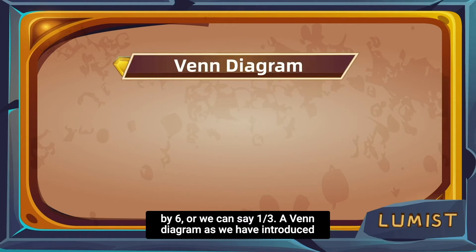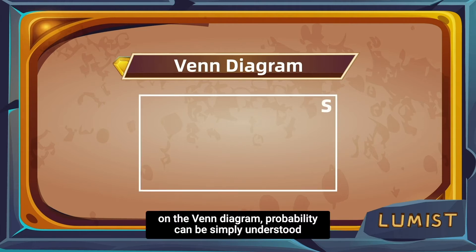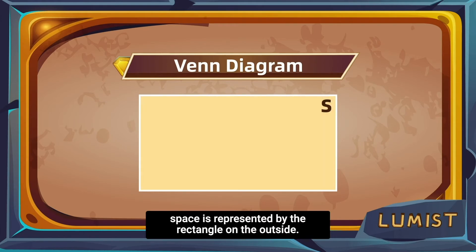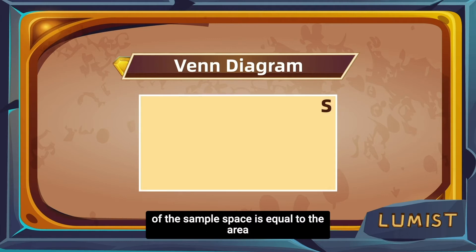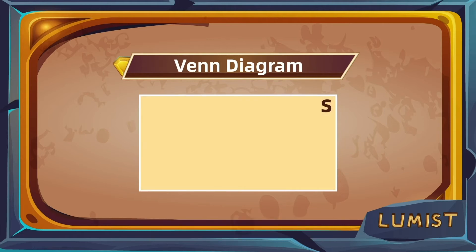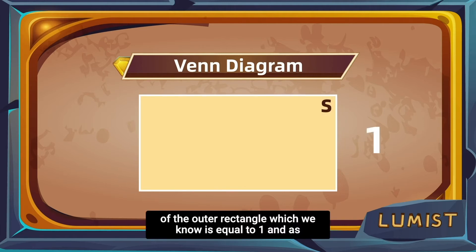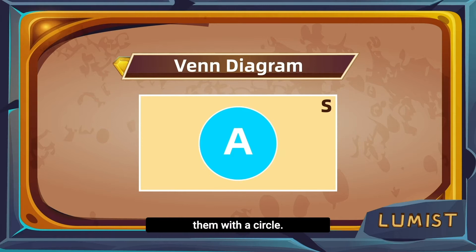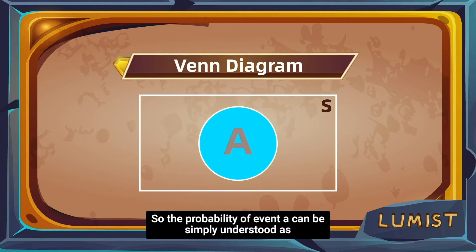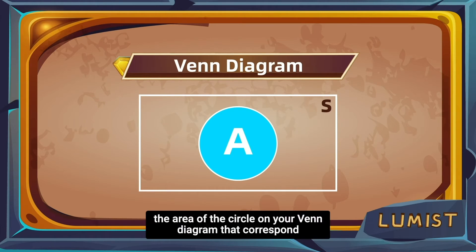Venn diagrams can really help with our understanding of probability. On the Venn diagram, probability can be simply understood as area. The sample space is represented by the outer rectangle, so the probability of the sample space equals the area of that rectangle, which is 1. For any event inside your sample space, denoted by a circle, the probability of event A is simply the area of the circle corresponding to event A.